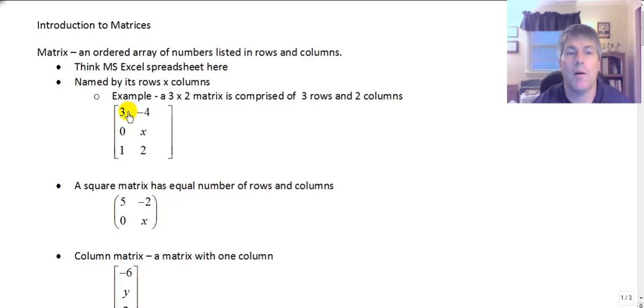Okay so a matrix works with the same kind of principles. It's divided into rows. The rows are horizontal and the columns are vertical. And a matrix is named by its rows first and then its columns.